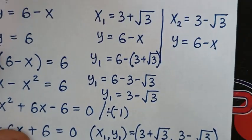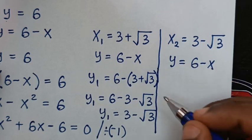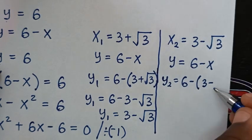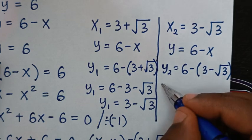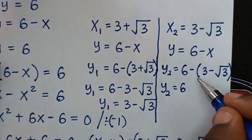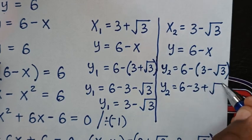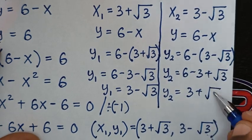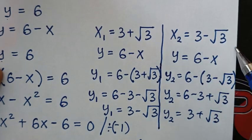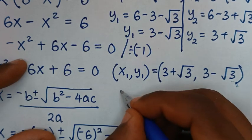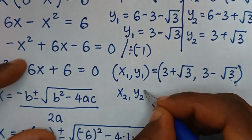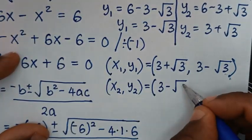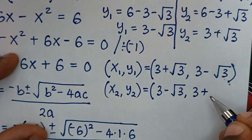For the second solution, y2 equals 6 minus x2, which is 6 minus (3 minus square root of 3). Taking the negative inside gives y2 equals 6 minus 3 plus square root of 3, so y2 equals 3 plus square root of 3. Therefore, the second solution is (x2, y2) equals (3 minus square root of 3, 3 plus square root of 3).